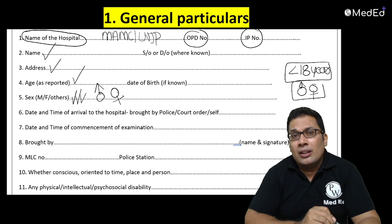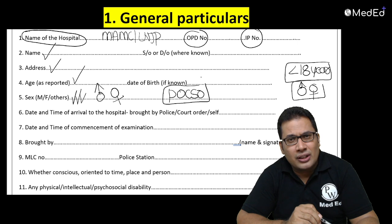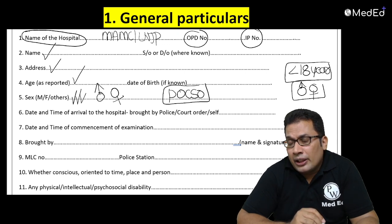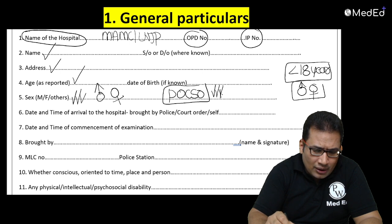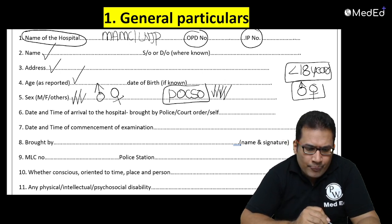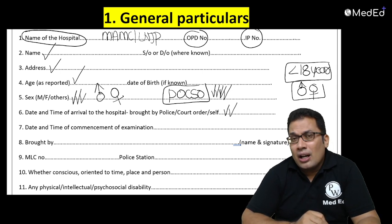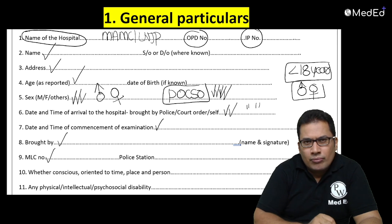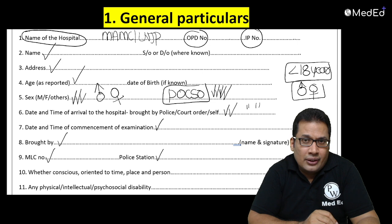Remember, a female can also be an offender as per the POCSO Act — Protection of Children from Sexual Offenses — which covers penetrative sexual assault, sexual assault, aggravated sexual assault (ASA), and sexual harassment. POCSO details and punishments can be asked in your exam. Also record the date and time of arrival to the hospital, whether brought by police, court order, or self. Record the MLC number, police station, and date/time of commencement of examination.